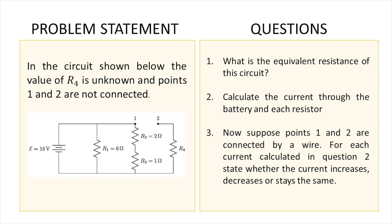So this is the circuit that we are going to be working with. It is a partially connected circuit and we don't know the value of R4, and points 1 and 2 are disconnected. We have to basically answer three things: find the equivalent resistance, calculate the current through the battery and each resistor, and then connect points 1 and 2 together and figure out what changes.